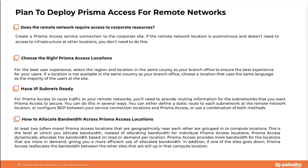If you have an existing Prisma Access deployment that had onboarded remote networks before upgrading to 1.8, the aggregate bandwidth feature is not available for you. It is only available for customers who onboarded remote networks after upgrading to 1.8 or started as a new customer from Cloud Services Plugin 1.8. If you select the aggregate bandwidth feature, secure inbound access for remote network sites and QoS for remote networks are not currently available. All locations you onboard share the allocated bandwidth for that compute location. For example, branch offices in Singapore, Thailand, and Vietnam all map to the Asia Southeast compute location.